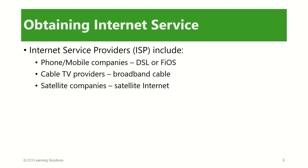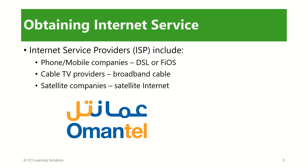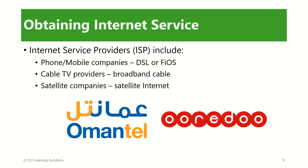If you want to access the internet from within your home, you must obtain internet service from an internet service provider, or ISP. An ISP is a company that provides internet connections to the public for a fee. Typical service providers include phone companies, cable TV companies, and satellite TV companies. These telecommunications companies provide an internet connection, usually for a monthly subscription rate and generally through a broadband connection.